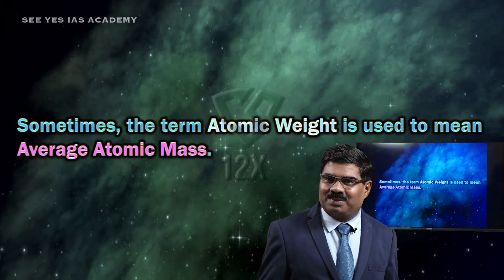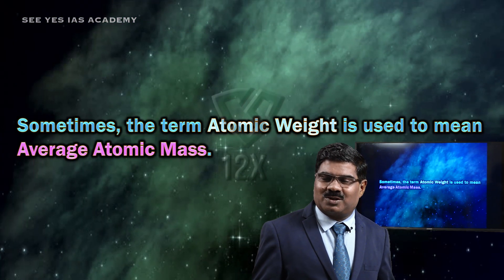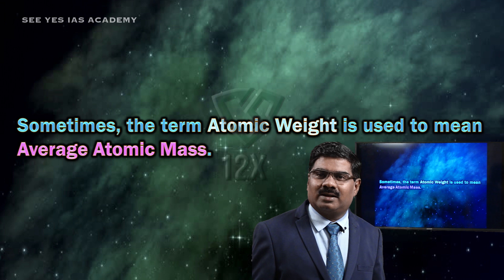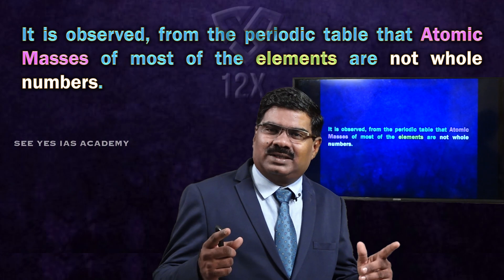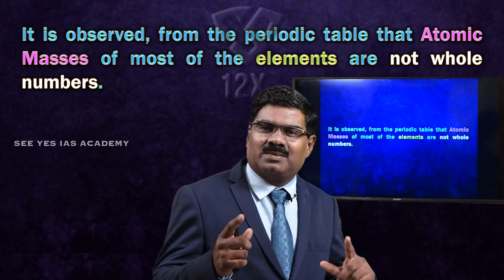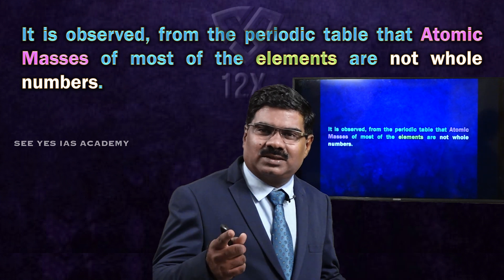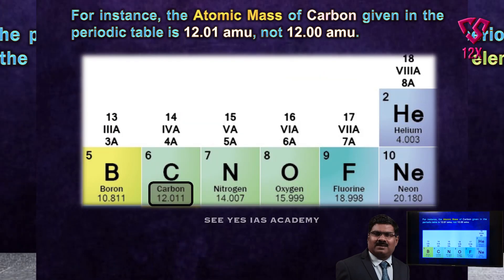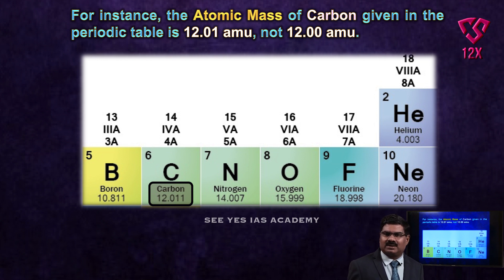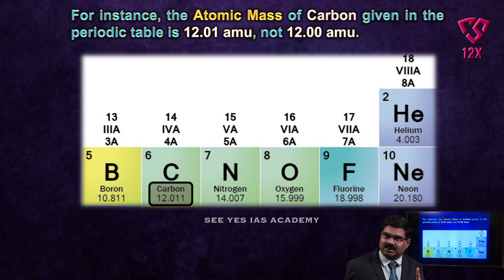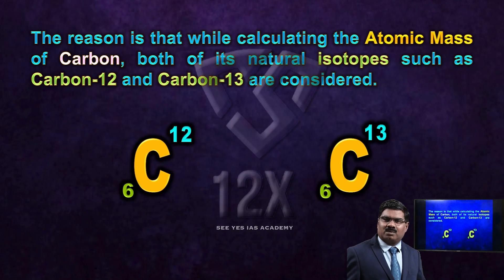Sometimes the term atomic weight is used to mean the average atomic mass. In the periodic table, atomic masses of elements are not always whole numbers. For example, the atomic mass of carbon in the periodic table is not 12.00 but 12.01.